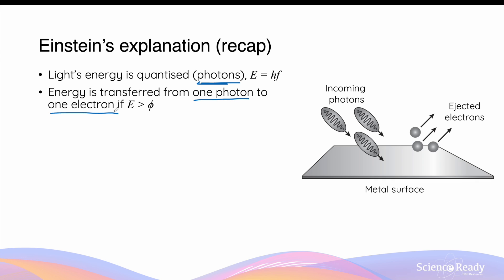A single photon can only transfer its energy to one electron, and one electron can only receive energy from one photon. This energy transfer can only occur if the energy of the photon is greater than the work function of the metal. The work function refers to the minimum amount of energy required to break the electron free from the metal's intrinsic structure.